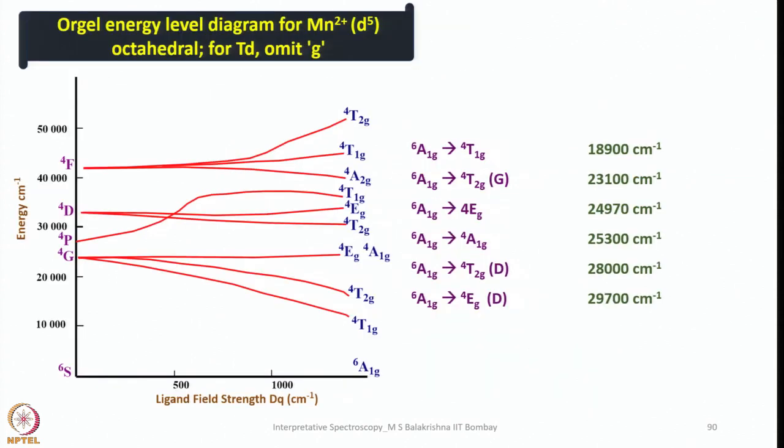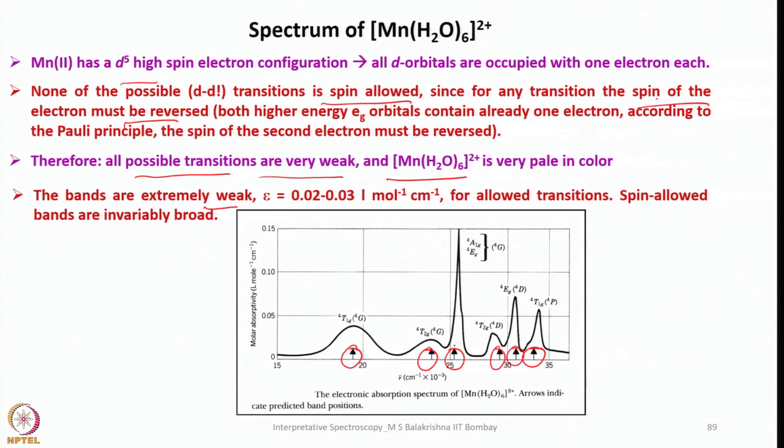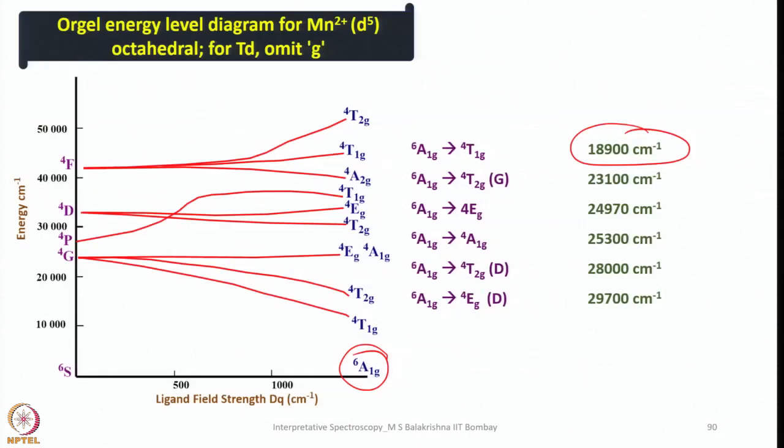Now the Orgel diagram for this unique d5 electronic configuration for both tetrahedral and octahedral. In case of tetrahedral, ignore g. One can write all possible transitions with ground state being 6A1g, and from 6A1g you can see about 6 transitions. The corresponding lambda maximum values are shown here. This spectrum identifies those transitions.